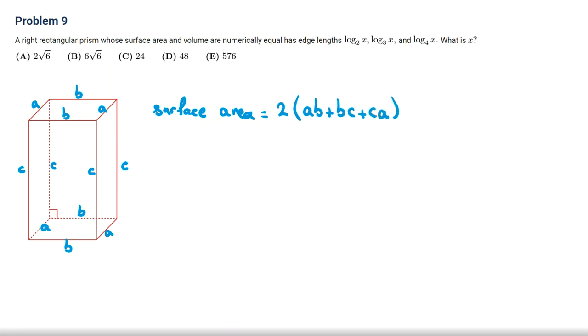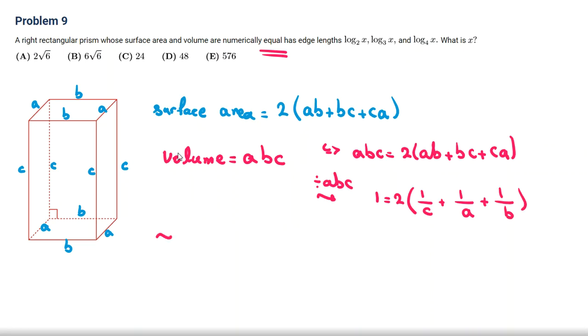It will be 2 times AB plus BC plus CA. Now, let's focus on finding the volume. If you want to find the volume, it will be the area times the height. It will be ABC. Now the problem says they are equal. So we conclude ABC equal to 2 times AB plus BC plus CA. If I divide both sides by ABC, it will be 1 equal to 2 times 1 over C plus 1 over A plus 1 over B. Divide by 2 both sides. 1 over C equal to 1/2 minus 1 over A plus 1 over B.